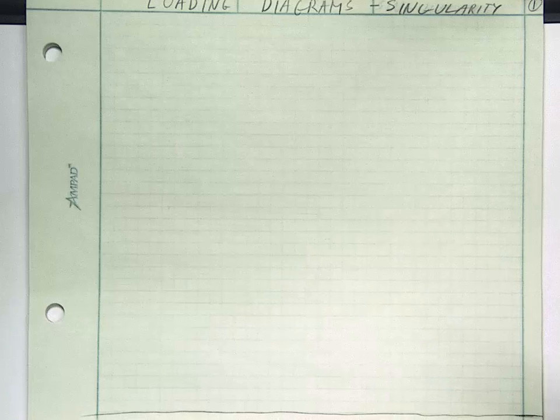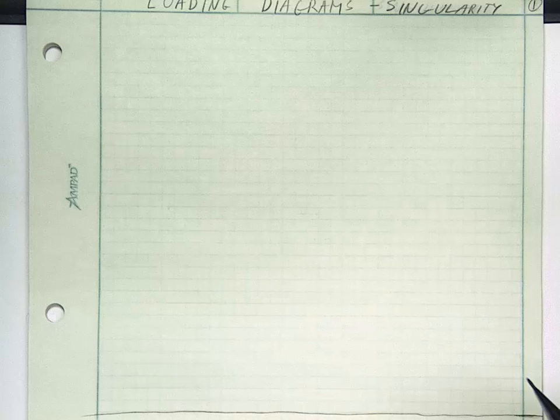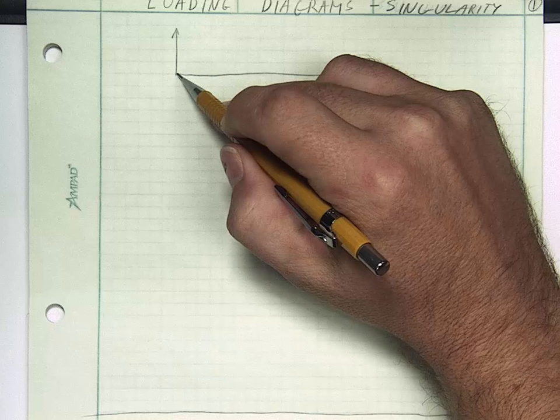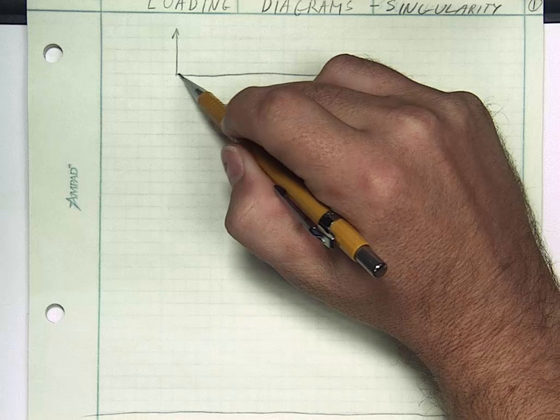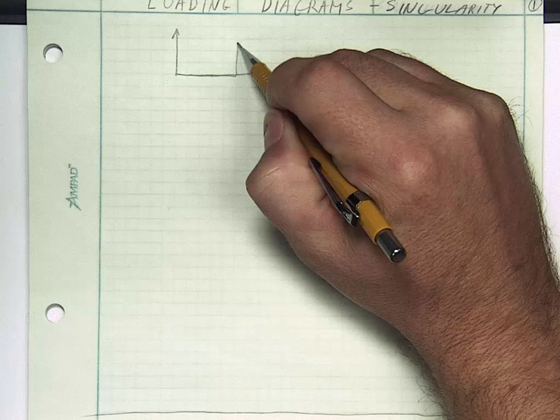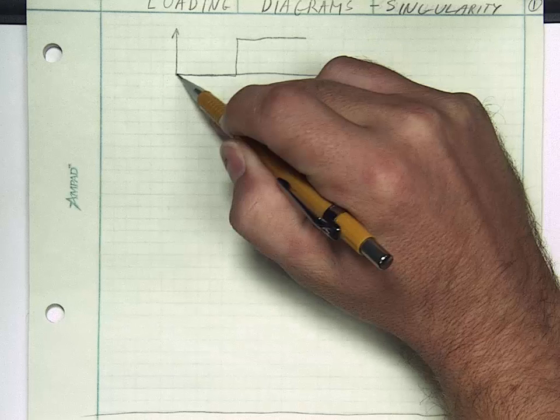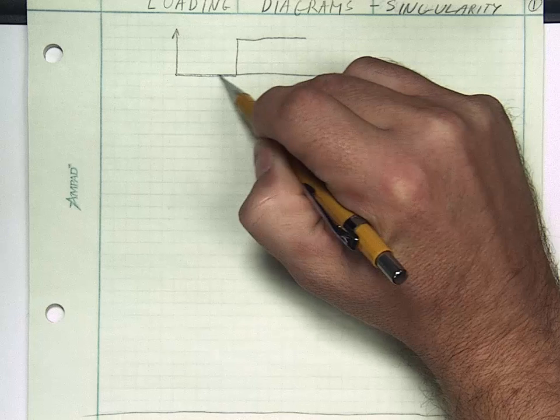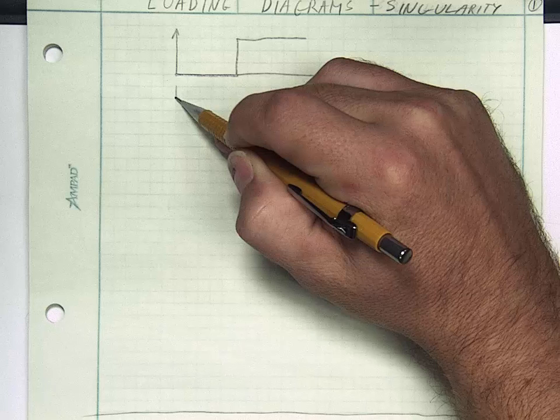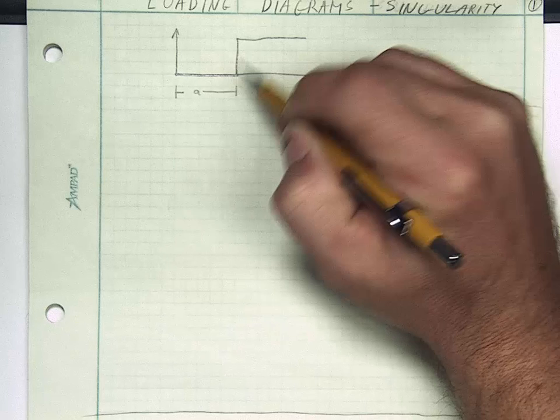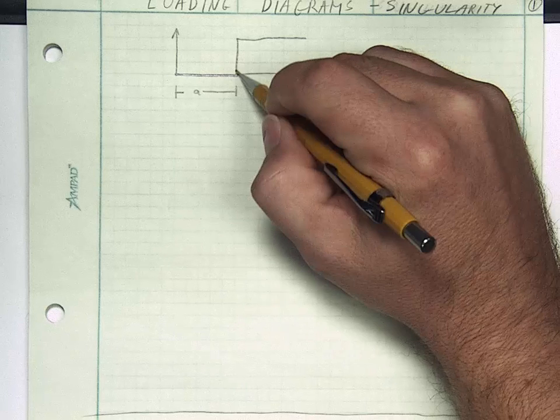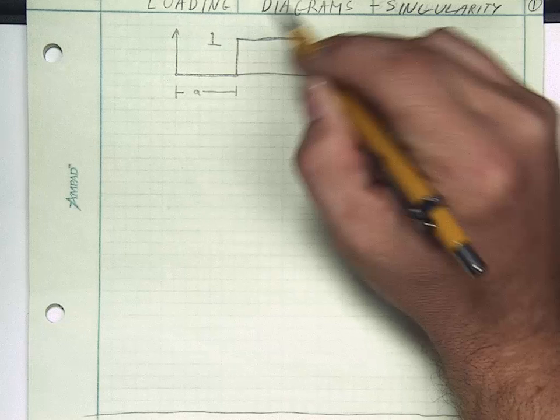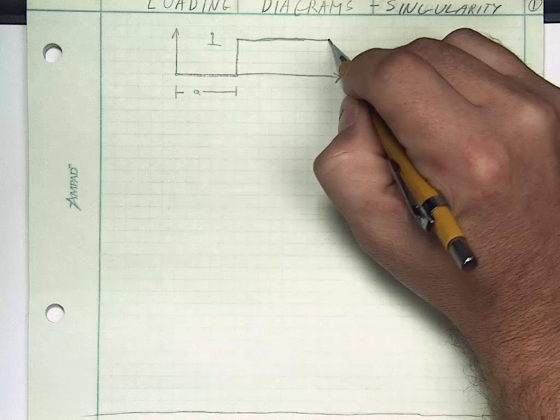First let's consider one of the most simple singularity functions. One of the most common is the unit step function. The unit step function says that the function is going to remain at 0 for a period of time. Let's say that time is a. And then at a the function is going to switch on and from now on it's going to have a value of 1.